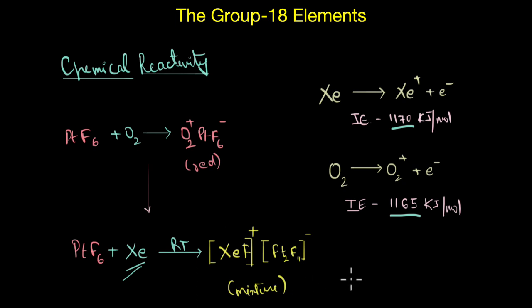Now this yellow solid was initially thought to be Xe+ PtF6−, exactly similar to the oxygen counterpart, simply replace oxygen with that of xenon. But later experiments suggest that it was probably a mixture of platinum complex and several xenon cations, with this particular complex being the major product. Now after this particular discovery, a number of xenon compounds were prepared in the laboratory, especially with highly electronegative elements like oxygen and fluorine.